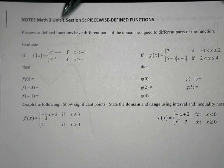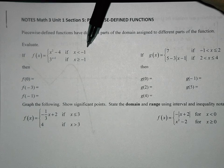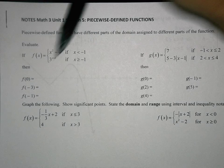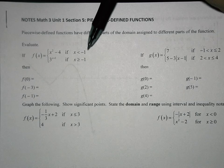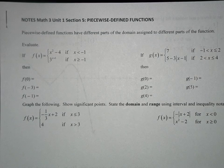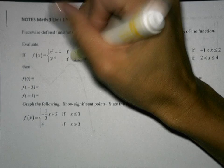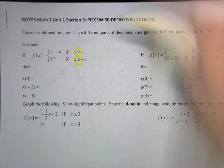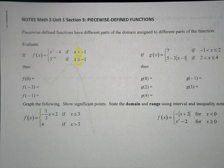If you look right here, we have x squared minus 4 if x is less than negative 1. And here we have 3 to the x plus 1 if x is greater than or equal to negative 1. Notice these signs — only one of them can have the equal to sign. Only one of the graphs can be equal to that value, not both of them.